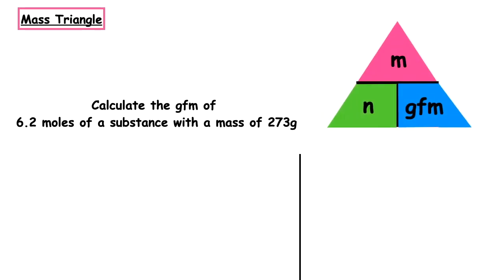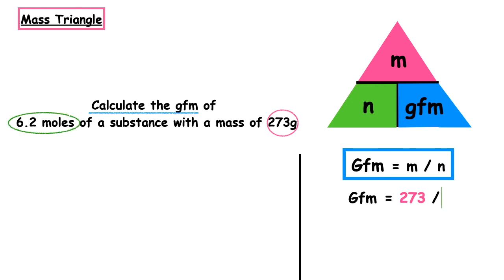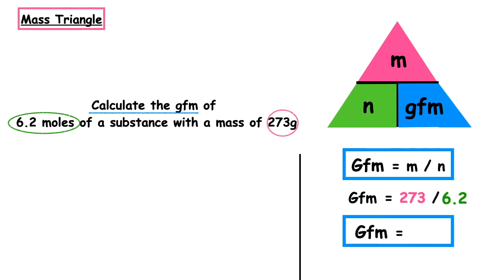You will very rarely be asked to calculate the gram formula mass using the mass triangle — more often you'll be given the name of a compound and have to work out the formula — but sometimes this comes up in multiple choice past paper questions. For example: calculate the GFM of 6.2 moles of a substance with a mass of 273 grams. GFM = m ÷ n = 273 ÷ 6.2 = 44 grams.